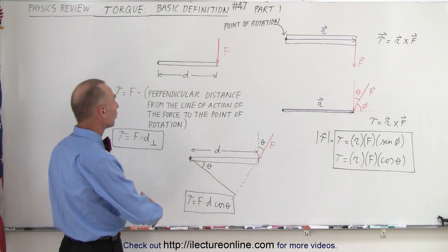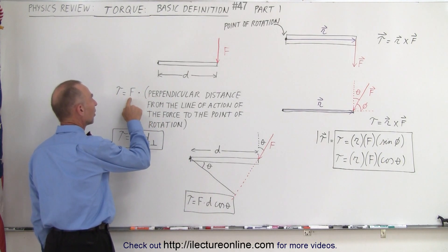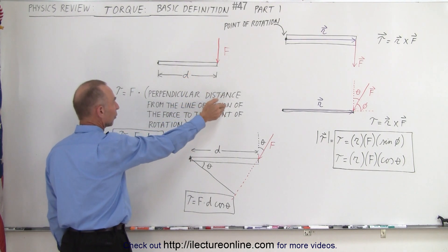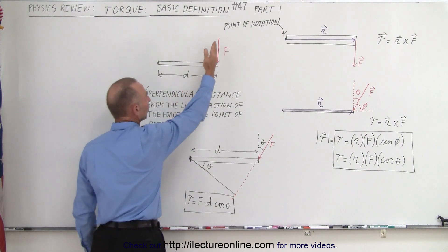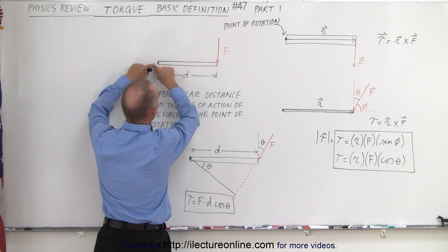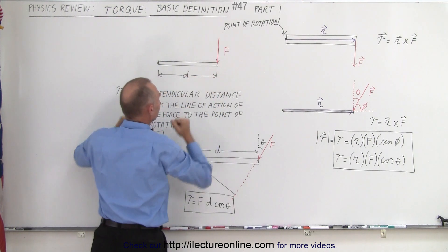Sometimes we just want the magnitude of the torque, which becomes the product of the force times the perpendicular distance from the line of action of the force to the point of rotation. Here's the line of action of the force, and the perpendicular distance from the rotation point to that line, so it's simply f times d.